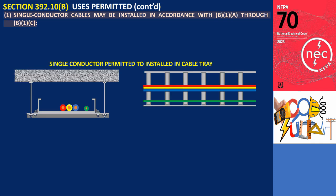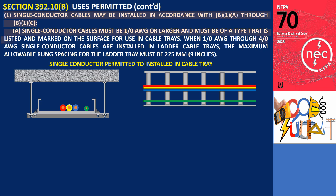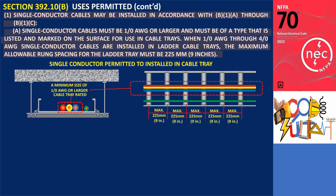Section 392.10(B)(1) covers single conductor cables. Single conductor cables must be 1/0 AWG or larger and must be of a type that is listed and marked on the surface for use in cable trays. When 1/0 AWG through 4/0 AWG single conductor cables are installed in ladder cable trays, the maximum allowable rung spacing for the ladder tray must be 225 mm. This requirement is designed to provide adequate support and stability for the cables, preventing sagging and potential damage.